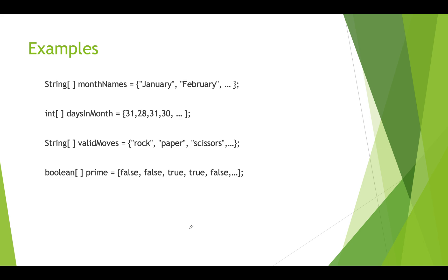Here are some practical examples. You might create an array of strings called month names and put all the month values in it. Similarly, you might have an array of ints for the number of days in each month, an array of strings with valid moves in a game, or an array of booleans called prime where each value is set to whether or not the corresponding number is prime — so all values are either true or false.